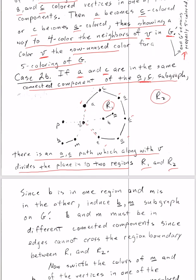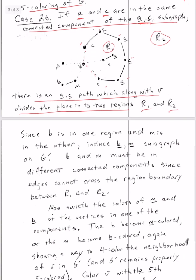We picked a and c because in this case, we want to induce different subgraphs to try to find a four coloring for the neighborhood of v. We'll look at b and m in this case. b is in one region and m is in the other. We're going to induce a blue-magenta subgraph on g prime. Now, b and m must be in different connected components in case 2b, since edges cannot cross the region boundary between r1 and r2. Because remember, our graph, by assumption, is planar.